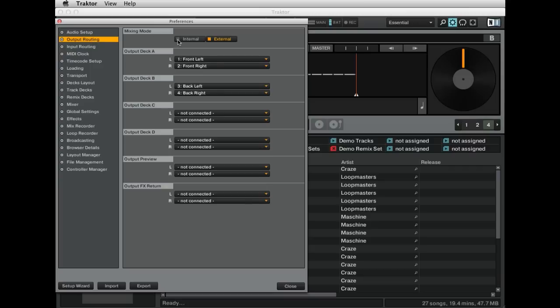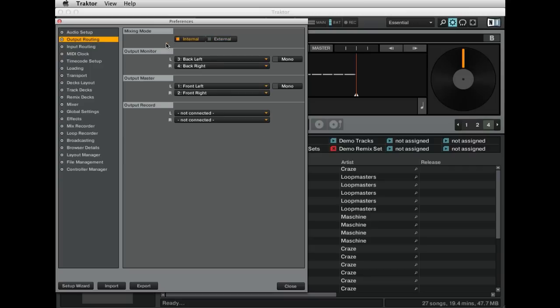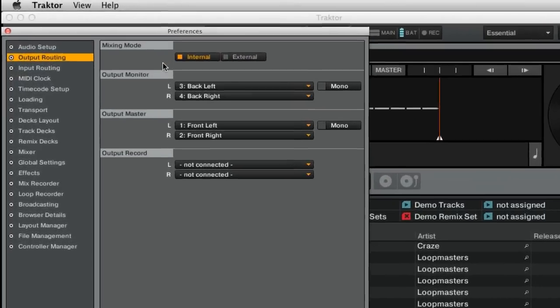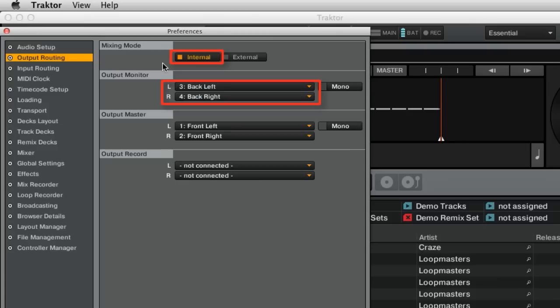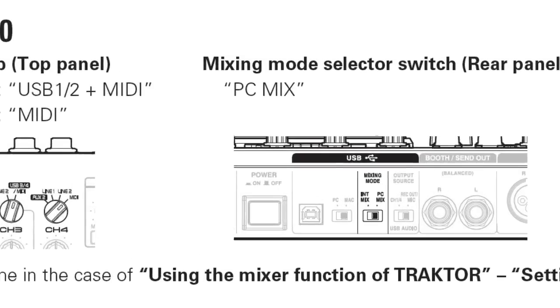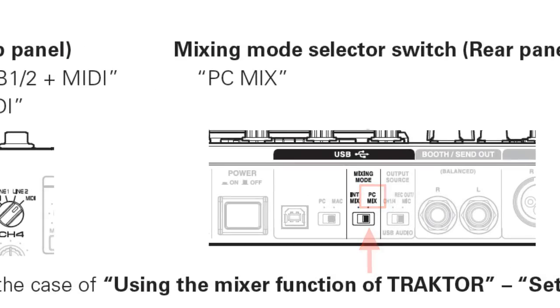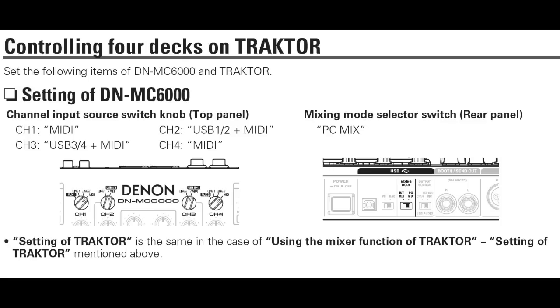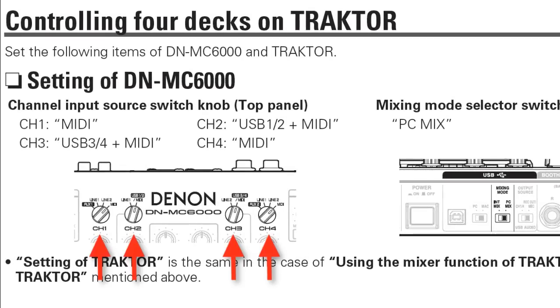If you wish to use 2-deck operation and perform the audio mixing internally inside Traktor, set the mixing mode to Internal and set the output Monitor to Channels 3 and 4, and the output Master to Channels 1 and 2. On the DNMC 6000, set the mixing mode switch to PC Mix. The same internal mixing audio setup is used when using 4-deck operation or 2 track decks with 2 remix decks. In addition, set all 4 channels on the DNMC 6000 to MIDI.